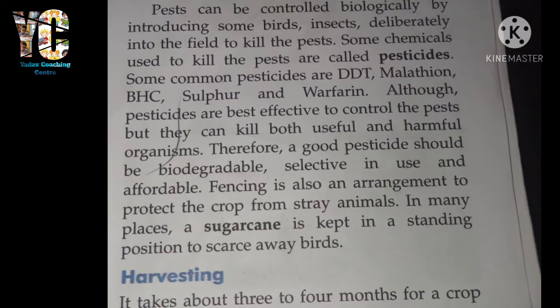Another method is using chemicals called pesticides to kill pests. Learn these names: DDT, malathion, BHC, sulfur, and warfarin. All pesticides are effective to control pests, but they can kill both useful and harmful organisms. Therefore, a good pesticide should be biodegradable — it should decompose in the soil, not remain there. It should also be selective in use — don't apply blindly in huge amounts — and it should be affordable.